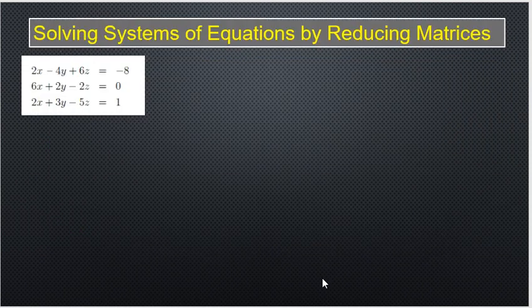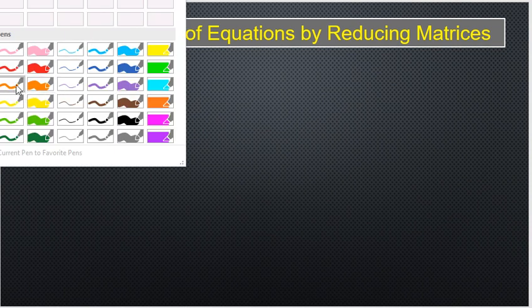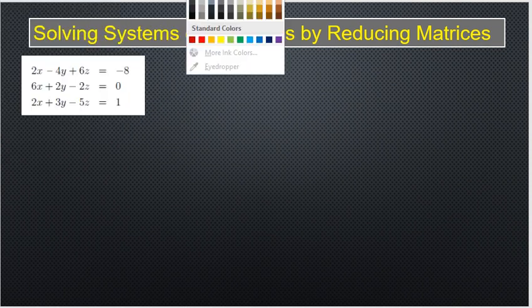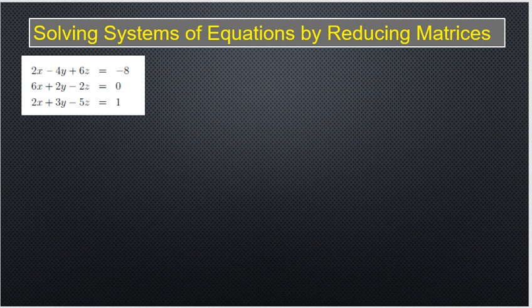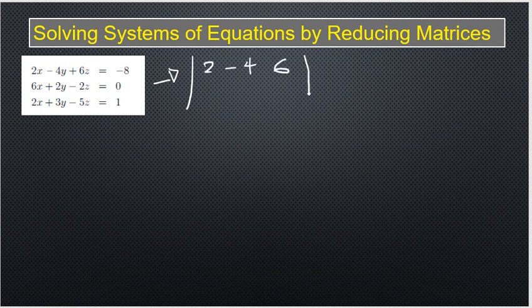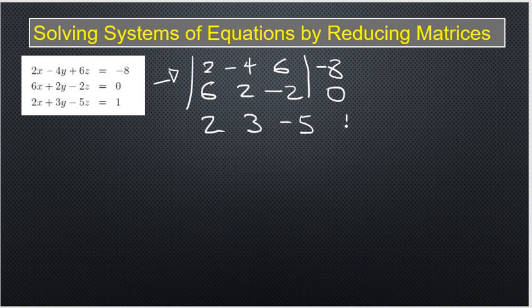Using these rules, let us see how to apply this method to solve the given system of linear equations. The system is: 2x minus 4y plus 6z equals negative 8; 6x plus 2y minus 2z equals 0; and 2x plus 3y minus 5z equals 1. The first step is to write the augmented coefficient matrix: [2, -4, 6 | -8], [6, 2, -2 | 0], [2, 3, -5 | 1].